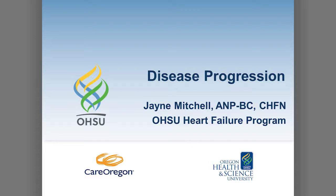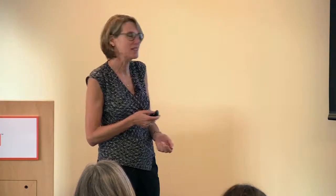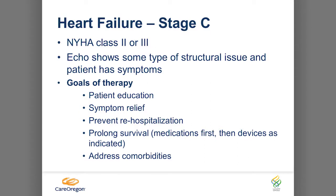We're going to talk a little bit about disease progression. We talked about stage C and New York Heart classes usually two or three consistently. If you look at the echo of a patient, you know the patient's going to have some type of structural difference. For stage C — going back to A through D — C is sort of most of your patients. Goals of therapy: patient education, symptom relief, prevent rehospitalization, prolonged survival, and also address the comorbidities.